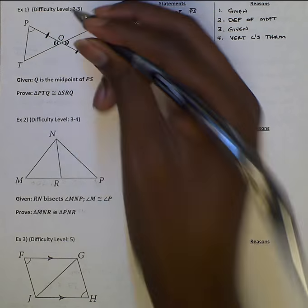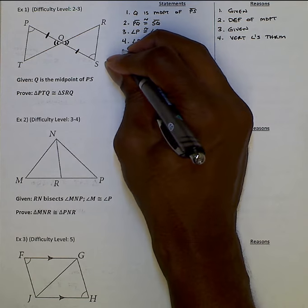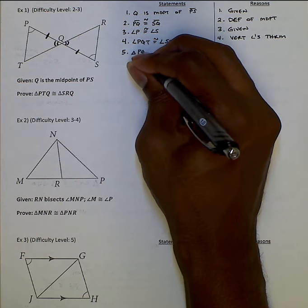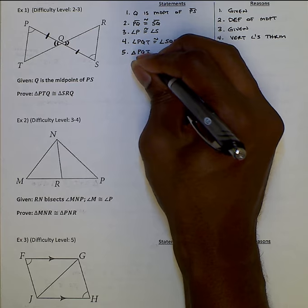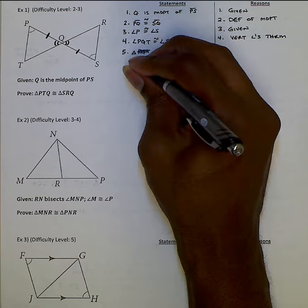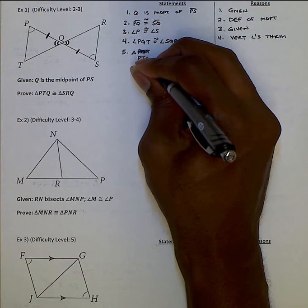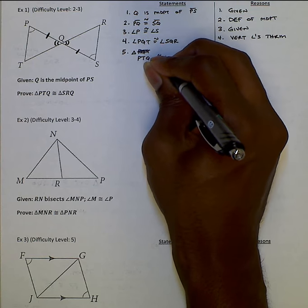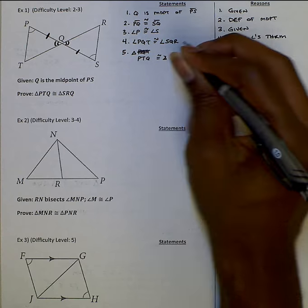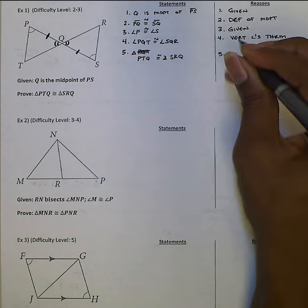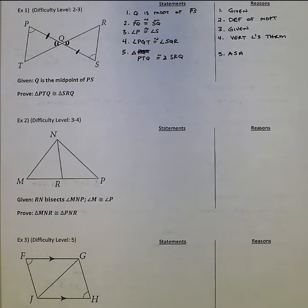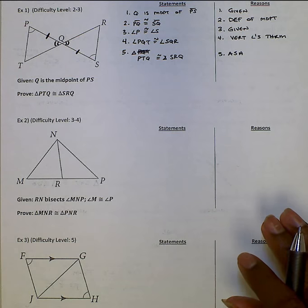I feel pretty good about this — I have my markings down. So we can prove that triangle PTQ is congruent to triangle SRQ by angle-side-angle.